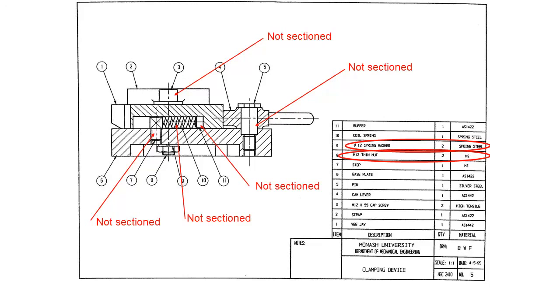And the same goes here for our M12 thin nut made out of mild steel we need two of those. So once again there's enough information provided in our parts list to purchase these parts.